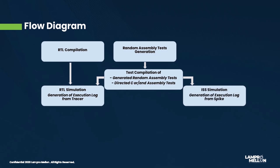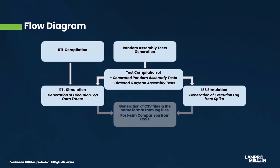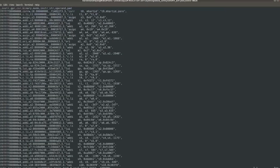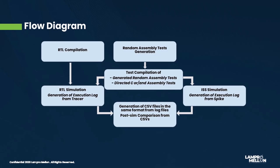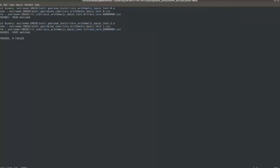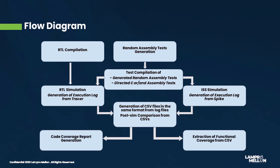For verifying the functional behavior of the core, we need to compare the execution log with a golden reference, and this is where Spike ISS comes in. On simulating the test on Spike ISS, an execution log is generated but in a format different from the tracer's execution log. So before post-simulation comparison, both log files are converted into CSVs in the same format. These CSV files are then compared instruction by instruction, looking for updates on the destination register. If it's the same in both CSVs for all instructions, the test passes; otherwise it fails and a log of the first few mismatches is generated. These mismatches will help you in debugging the functionality of the core.